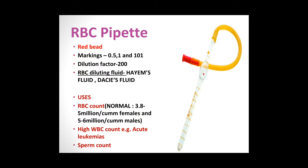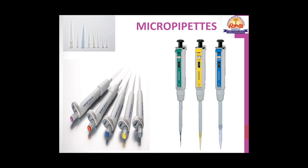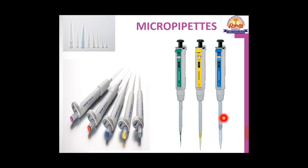RBC diluting fluids are Hayem's fluid and Dacie's fluid. The RBC pipette is used with the Neubauer chamber for RBC count. Normal RBC count: females 3.8–5 million per cubic millimeter, males 5–6 million per cubic millimeter. The RBC pipette can also be used for dilution in cases of high WBC count, such as in acute leukemias, and for sperm count. In practice, automated micropipettes are used for dilution, with adjustable tips of different capacities.